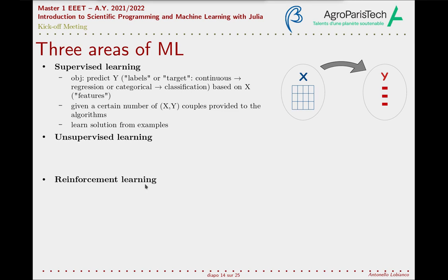The information to predict, the probability of default for example, is called a label or target or simply the Y, while the characteristics from which to make the prediction, the current debt level, the previous default history, the monthly incomes, are the X or the feature vector.